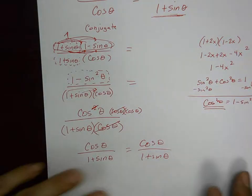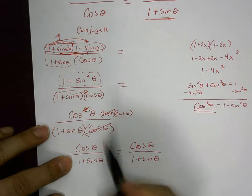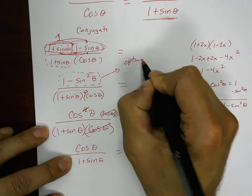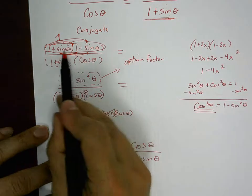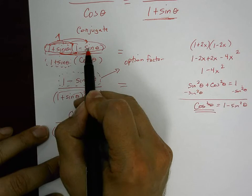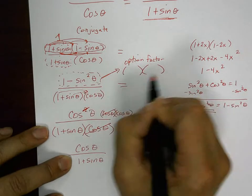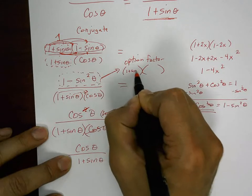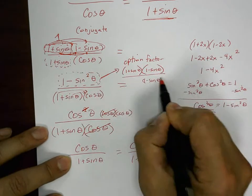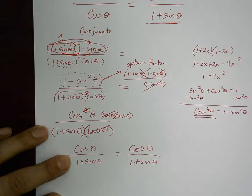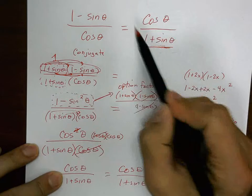One last thing: with one minus sine squared theta, one option is to replace it with cosine squared theta, but there's another option — you can factor it. Factoring brings you right back to one plus sine of theta times one minus sine of theta. Sometimes you'll start with one minus sine squared theta and want to factor it because there's already a one minus sine of theta in your denominator, so those cancel out. You have to think about which technique serves what you're trying to get to. If the final product just says one plus sine of theta, it would have been better to factor and cancel rather than replace with cosine squared theta.